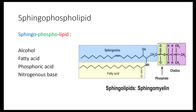The next classification is sphingophospholipids. Recall that for glycerophospholipids we have a glycerol molecule with two fatty acids forming diacylglycerol, to which a phosphoric acid is added to form phosphatidic acid, and then a nitrogenous base is added. A sphingophospholipid is very similar: the alcohol is sphingosine, combined with a fatty acid, a phosphoric acid, and a nitrogenous base — constituting a sphingophospholipid, analogous to the glycerophospholipid.